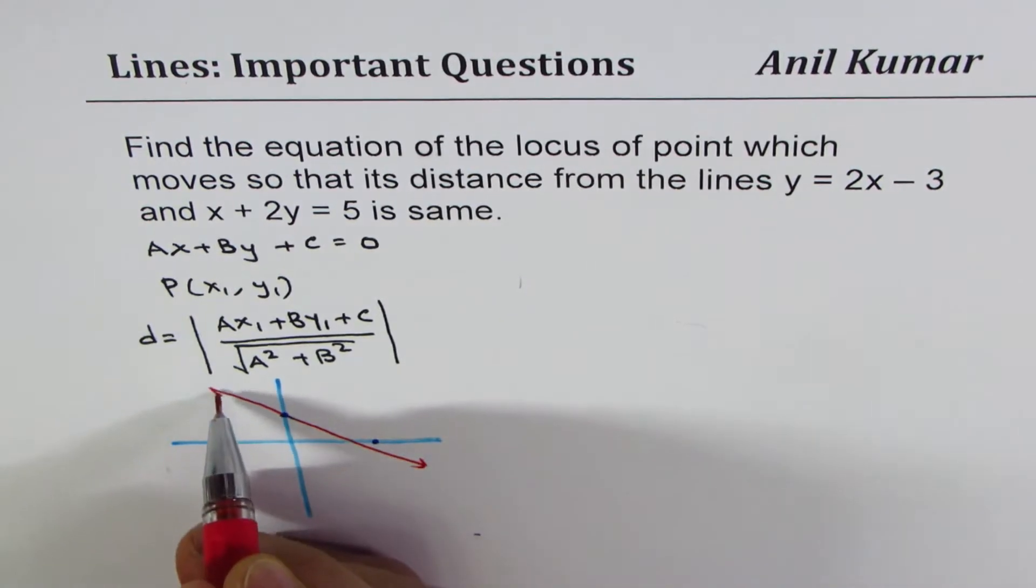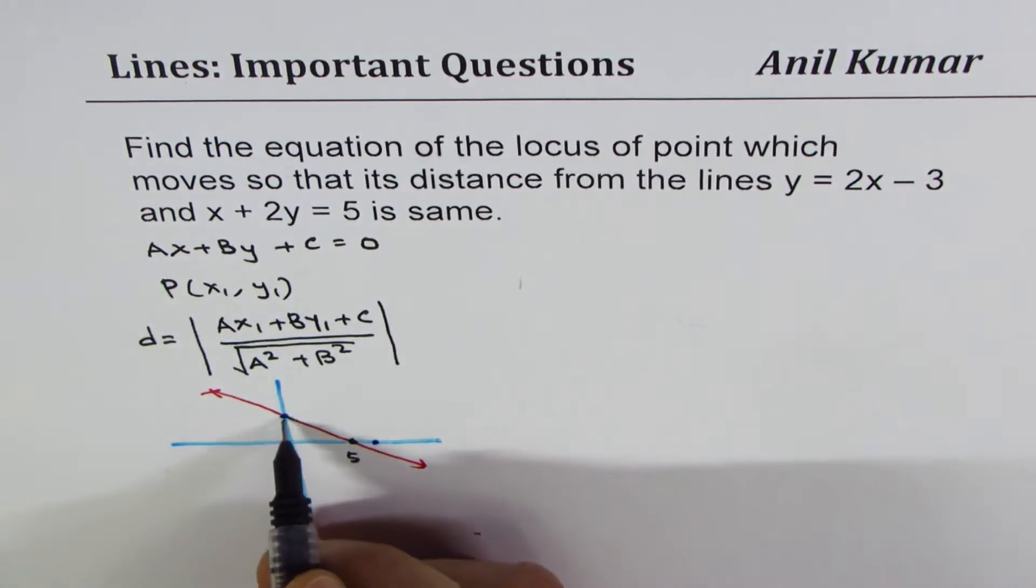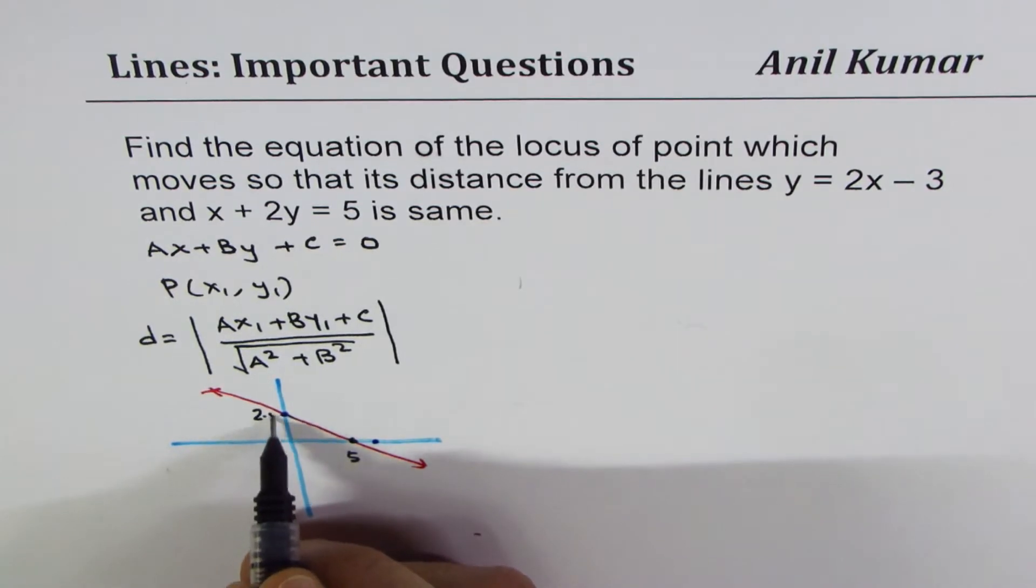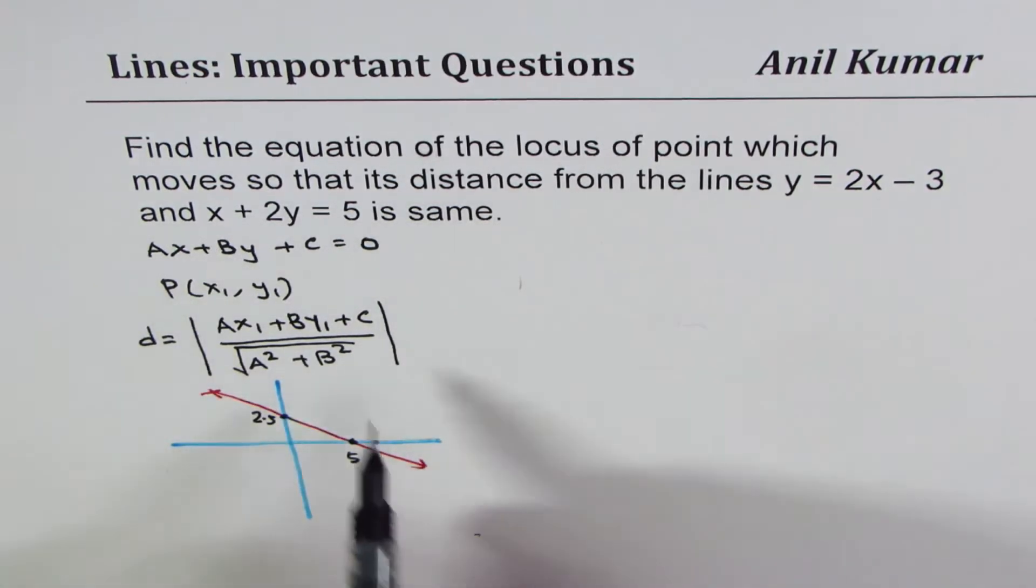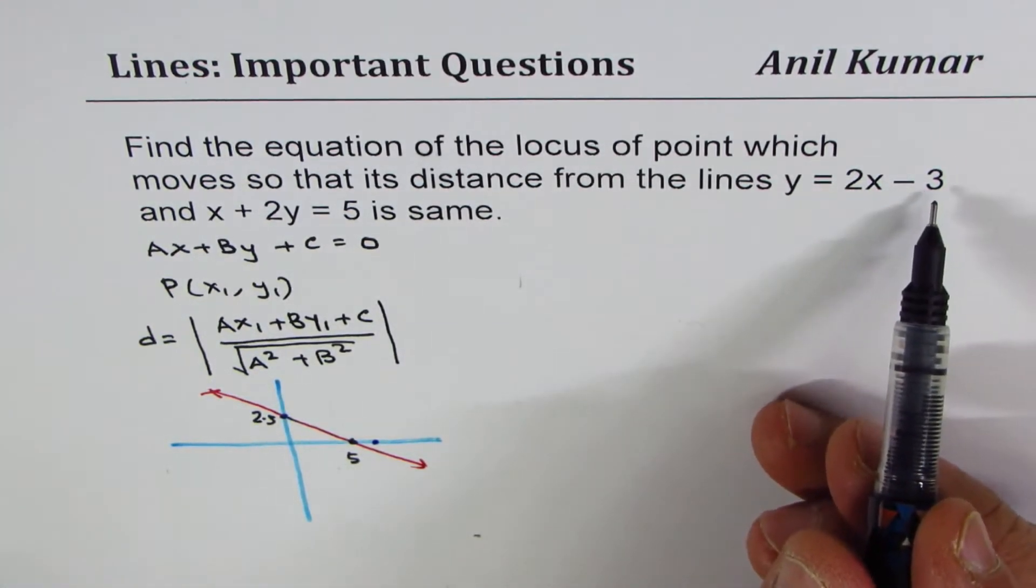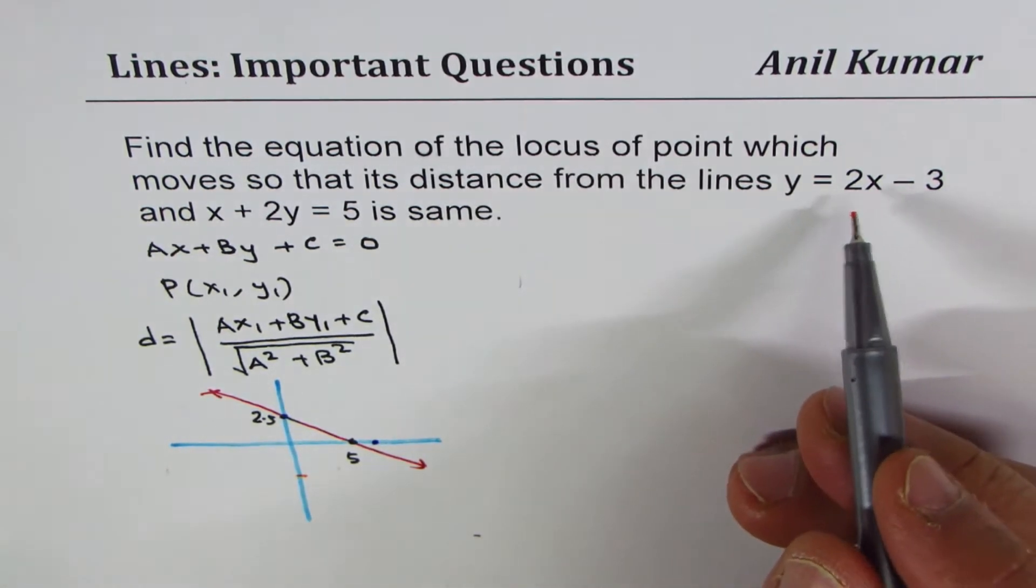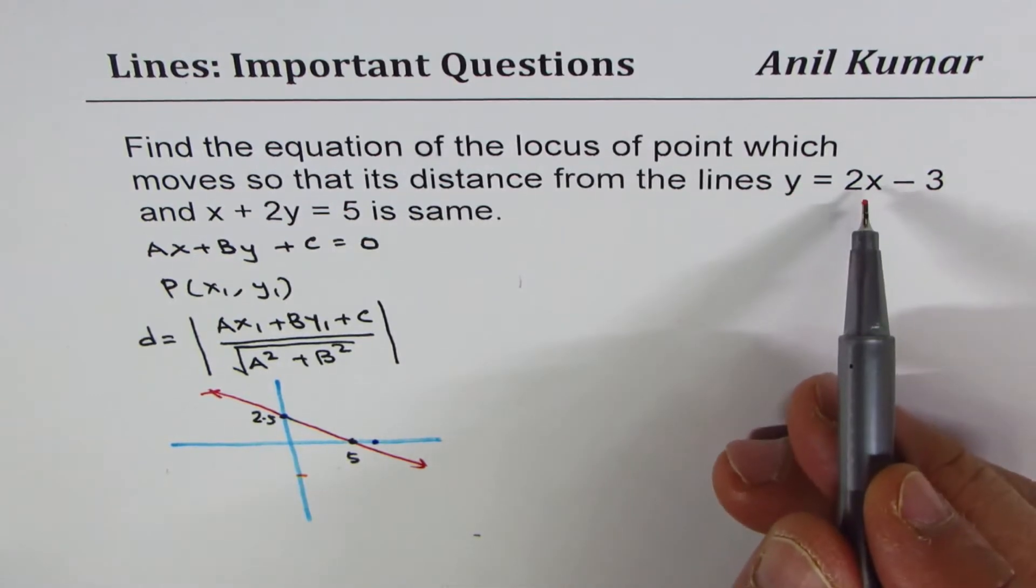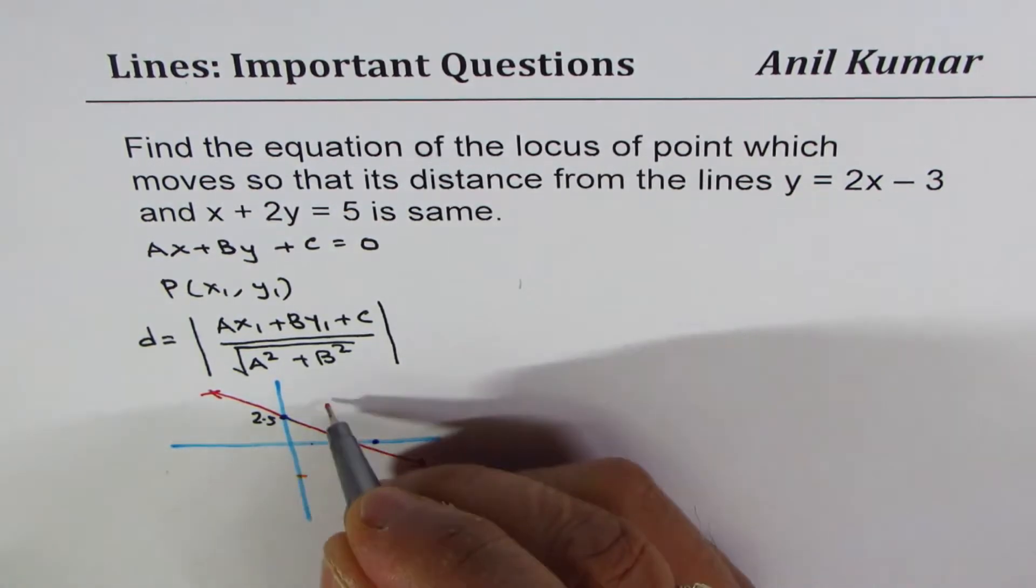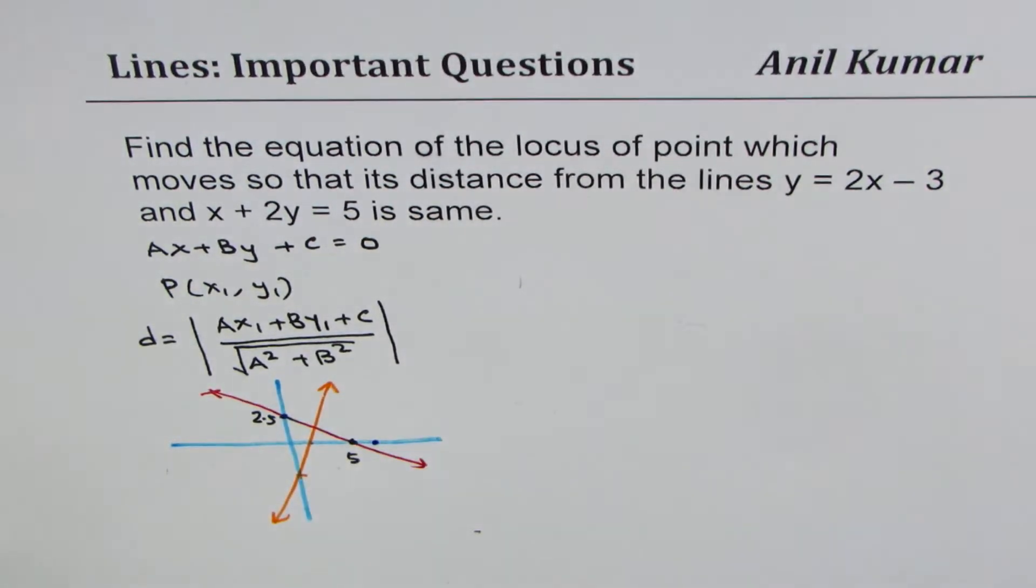We'll mark this as 5 and this is 2.5 for us. That is the line x plus 2y equals 5. Here we have 2x minus 3. So y-intercept is minus 3, and the slope is 2. If I write y equals 0, I get 3 over 2, 1.5. So it goes something like this.